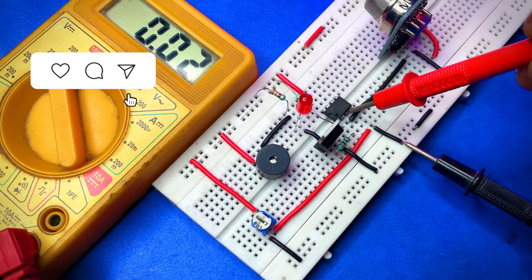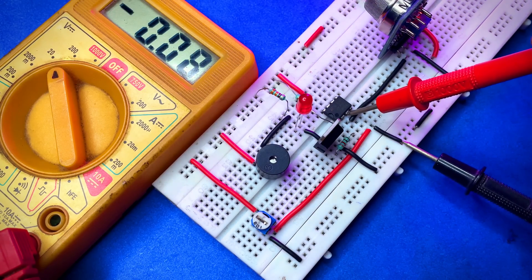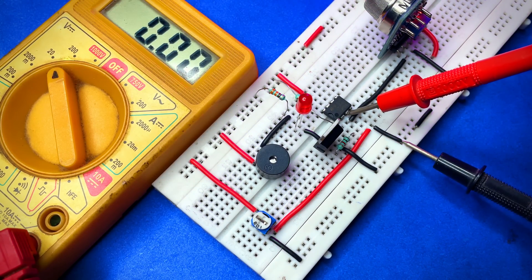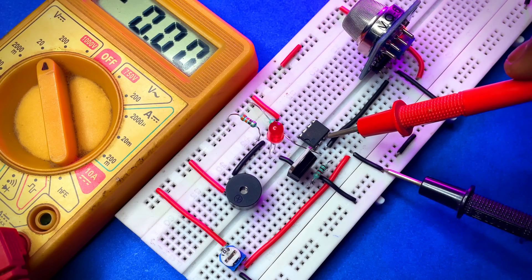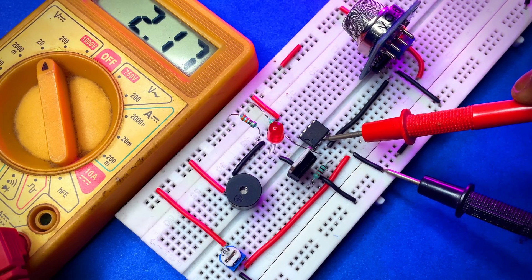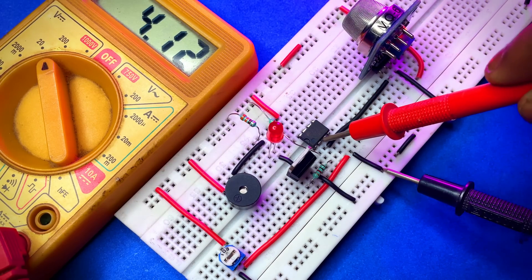Now I am using this multimeter to set the reference voltage. As you can see the non-inverting pin showing zero voltage. Now let's increase the voltage. As you can see now the voltage is showing 2.18V, so that means non-inverting pin has fixed voltage. Now let's measure the inverting pin voltage and it is showing 4.14 voltage.